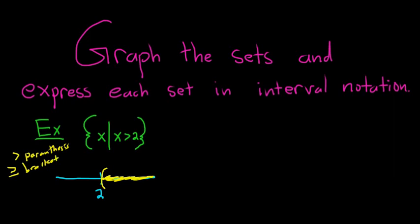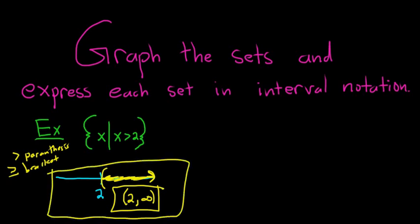From the picture, we can get the answer. We read it left to right: parenthesis 2, comma, infinity — because it goes off forever to the right, so we should have that arrow there. So that is the answer: the graph and the interval notation.